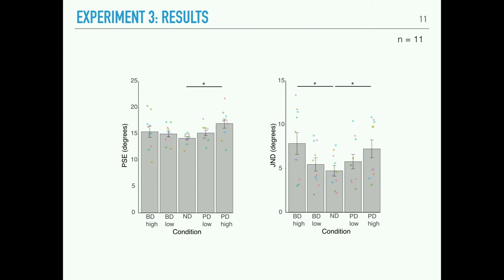The data show an elevation in the PSE, meaning we had to make the comparison slant higher for it to be perceived as equivalent to the non-distorted 15-degree reference — indicating an underestimation of slant for the distorted comparison, which was significantly different from the non-distorted condition in the high pincushion distortion condition. We also found evidence that distortion causes decreased sensitivity to changes in slant, shown by an elevation in the JND for both the high pincushion and high barrel distortion conditions relative to the non-distorted condition.